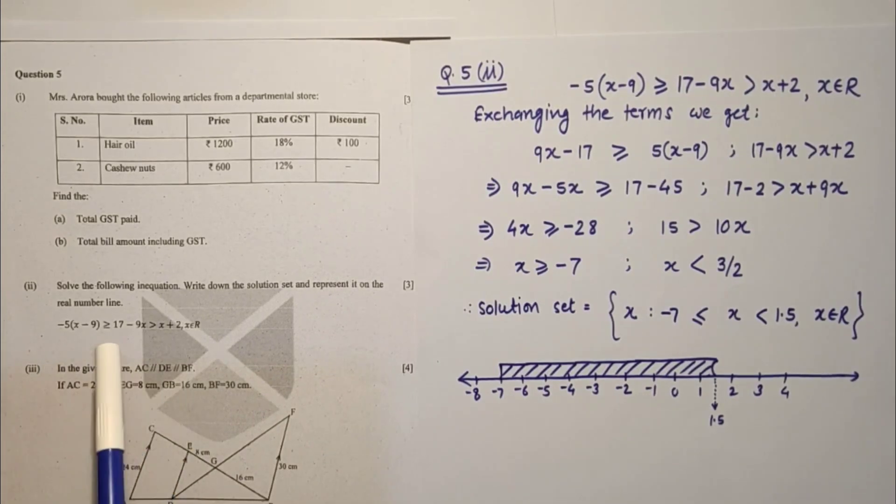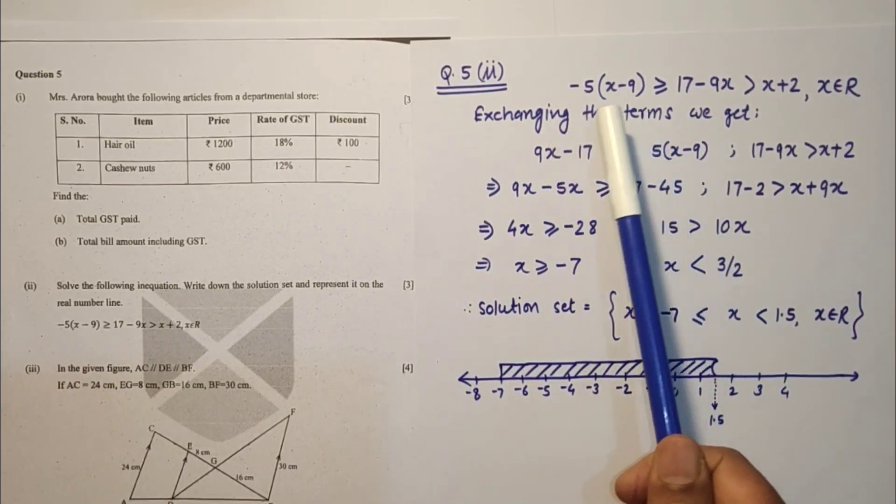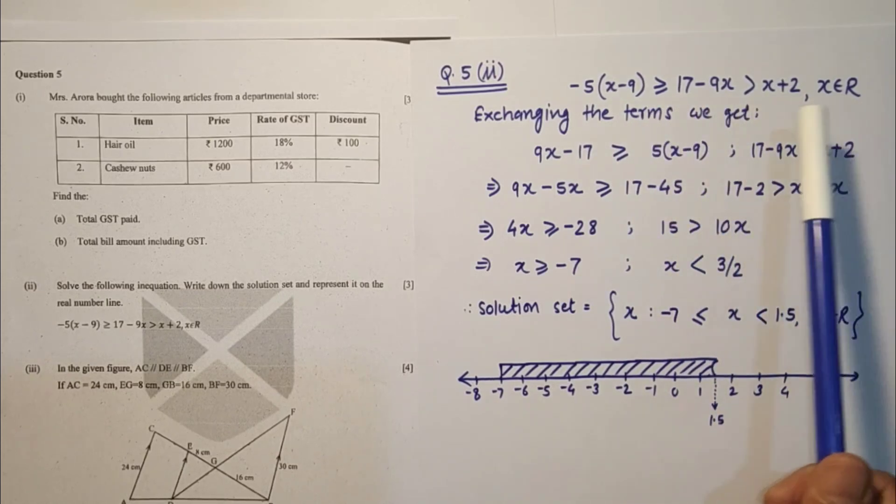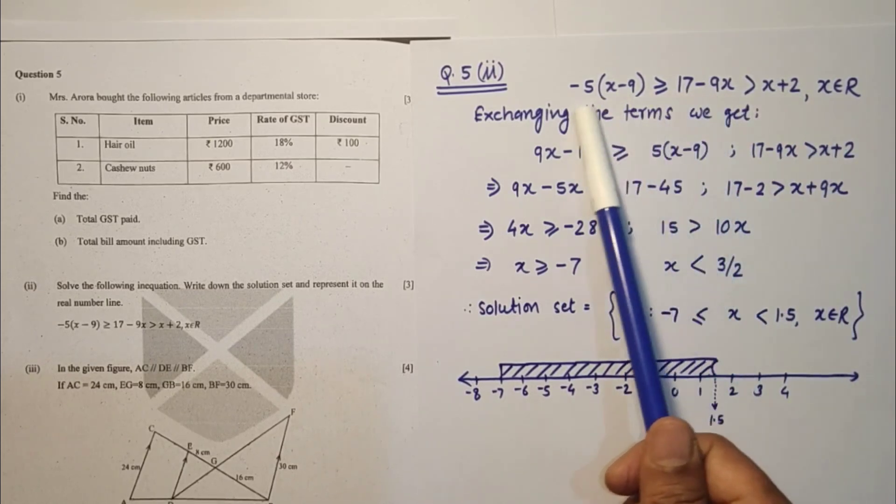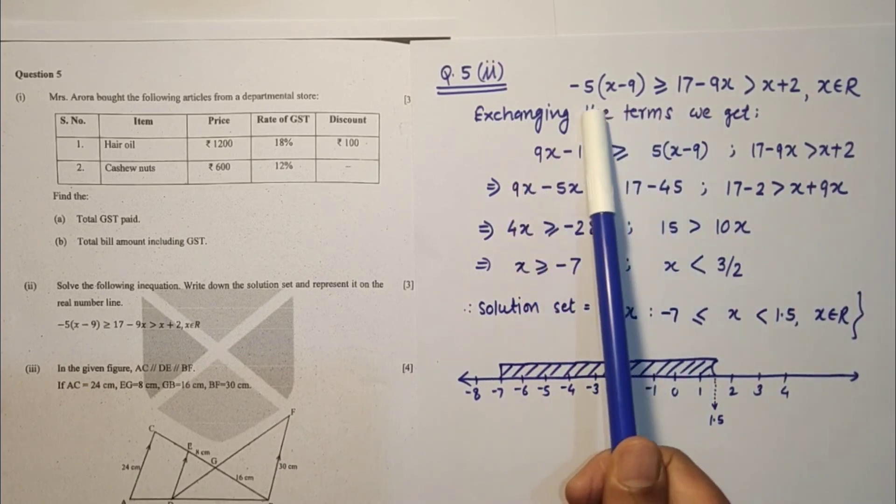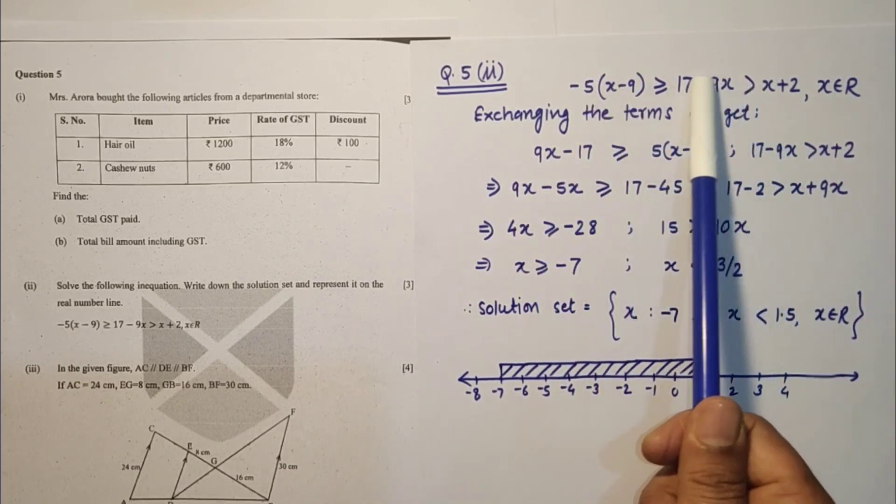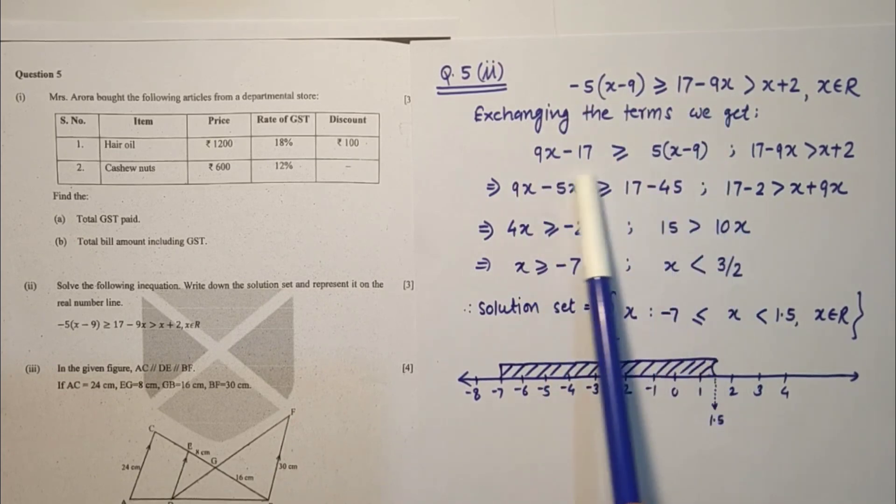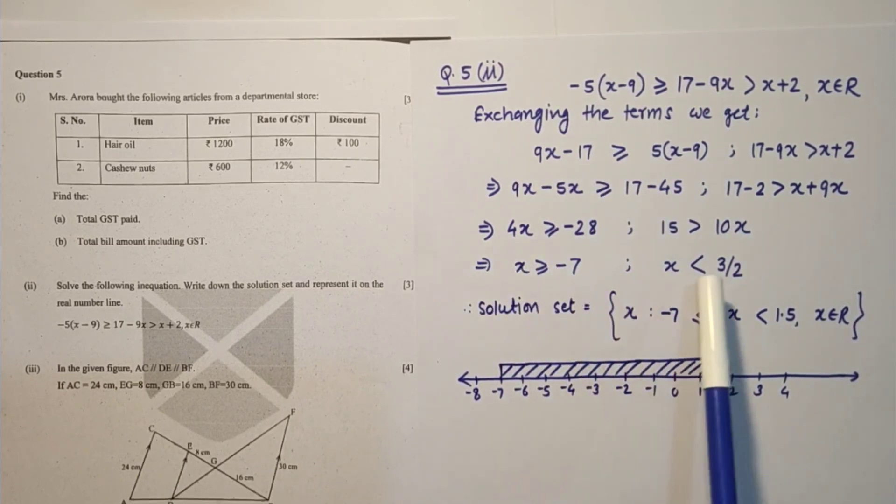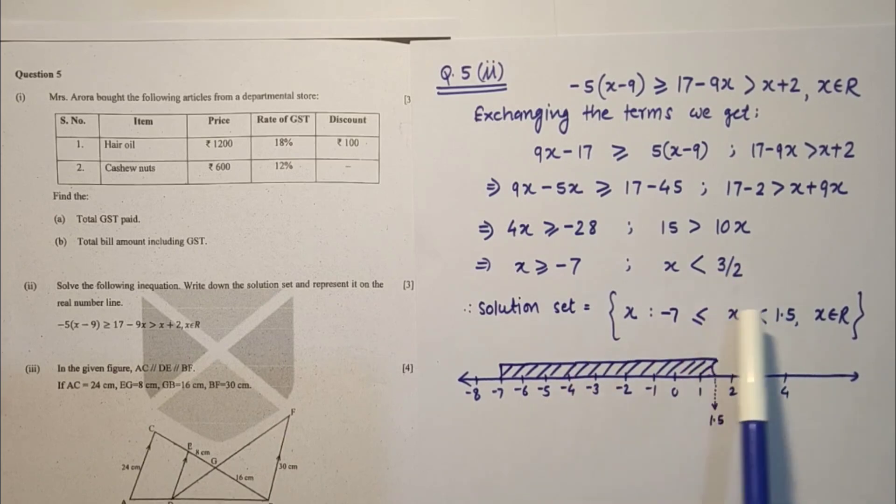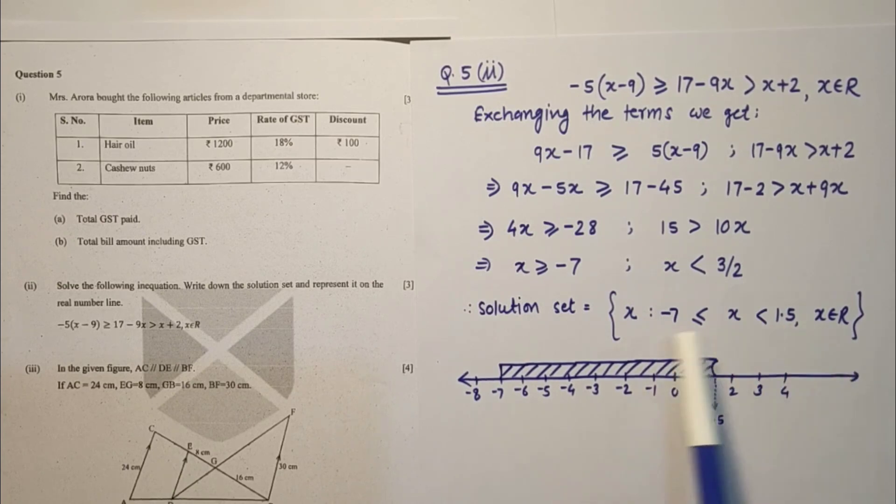Question 5 second sub part. This is inequality minus 5 into this greater than equal to this. We took this separately and these two separately. Just transpose, simplification gives x is greater than minus 7 and x is less than 1.5. Since it belongs to real numbers, this is the set builder form solution set, and this is the number line representation. Minus 7 is included, 1.5 is not included.